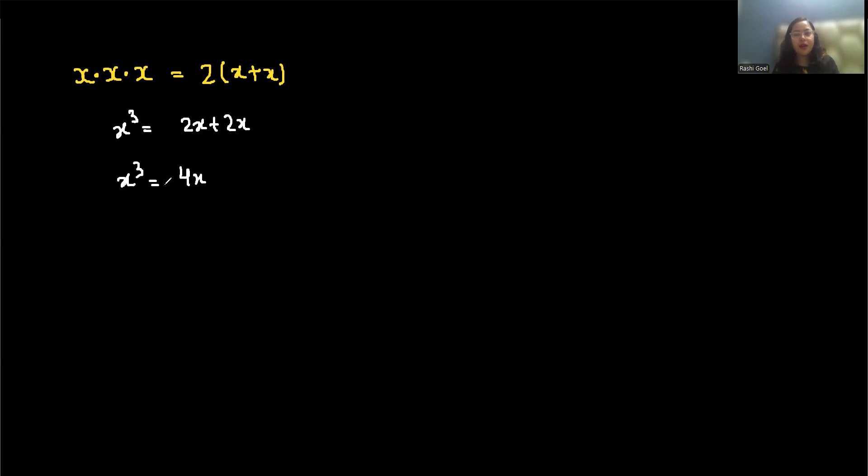Cubic equals 4 times the number x. Now let's take all the terms together, so x cube minus 4x equals 0. Now we can take out the factor x as common, so x times x square minus 4 equals 0.